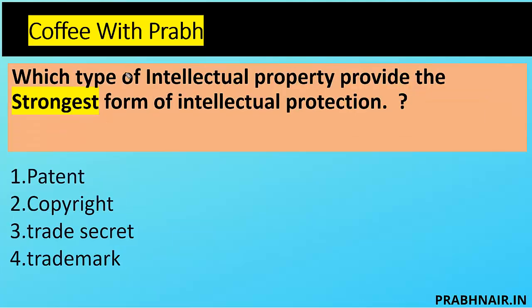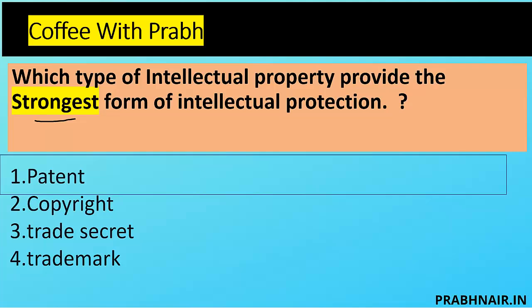Next coffee short: which type of intellectual property provides the strongest form of protection? The answer is patent. If Google registers Android, no one else can register it. If a company registers a patent for a vaccination, no one can copy that idea because when you register a patent it becomes national and global. Copyright can be copied by changing words or music tunes. Trade secrets lose value once disclosed. Trademarks can be slightly modified. So the strongest form of IP is patent — though after 20 years it goes public.